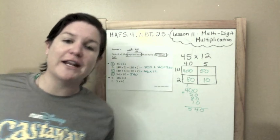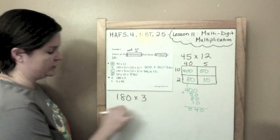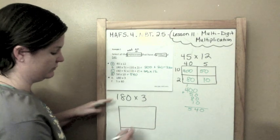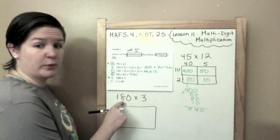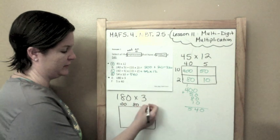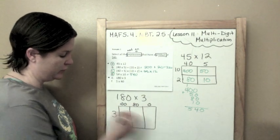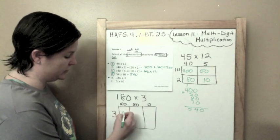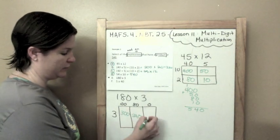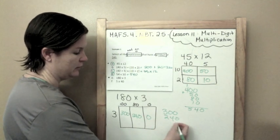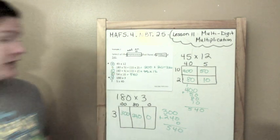Now, I promised that I would do 180 times 3 using the partial products method. So let's do that partial products area model. First make your rectangle. Getting ahead of myself. 100. We take 80. We're just expanding this out. And then we take 0. Some people don't even need to put the 0 there, but I'm just showing you. And now we just separate them. 3 times 100 is 300. 3 times 80 is 3 times 8, which is 24 with a 0. And 3 times 0 is 0. So when we add these babies up, we get 540. So that is an answer.